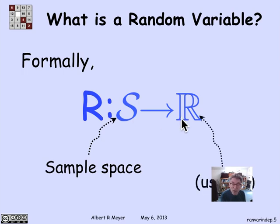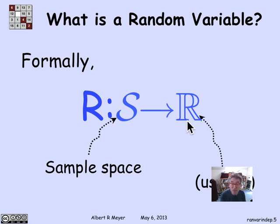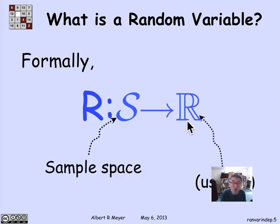Usually this is a real-valued random variable. It might be a subset of the real numbers, like integer-valued random variables. Occasionally we use complex-valued random variables — that happens in physics in quantum mechanics — but not for our purposes. We're just going to mean real-valued from now on when we talk about random variables.